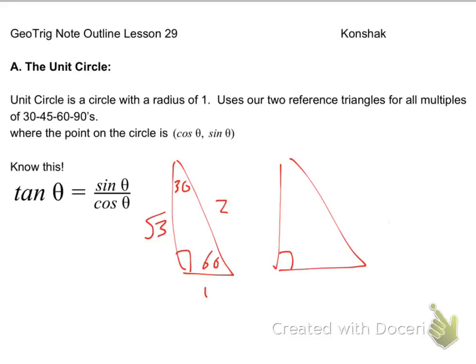The unit circle, guys, is just sine, cosine, and tangent of our two reference triangles. And if you guys remember our reference triangles, we can jot those down.